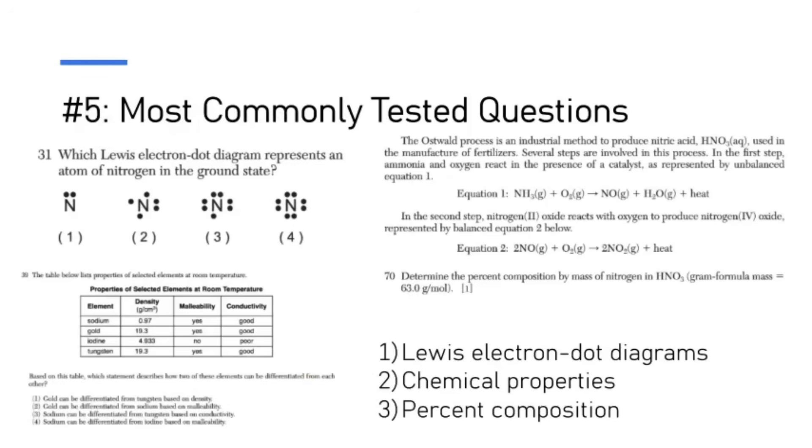And our last tip here is the most commonly tested questions. These are stuff you definitely want to focus on because I can guarantee you, based upon my predictions and analyzing the past regents exams, these questions are pretty much guaranteed to show up. Number one is a question on Lewis electron dot diagrams. Another one is on chemical properties. That one's probably going to be a multiple choice question. And then you're definitely going to get a short answer question asking you to calculate percent composition.